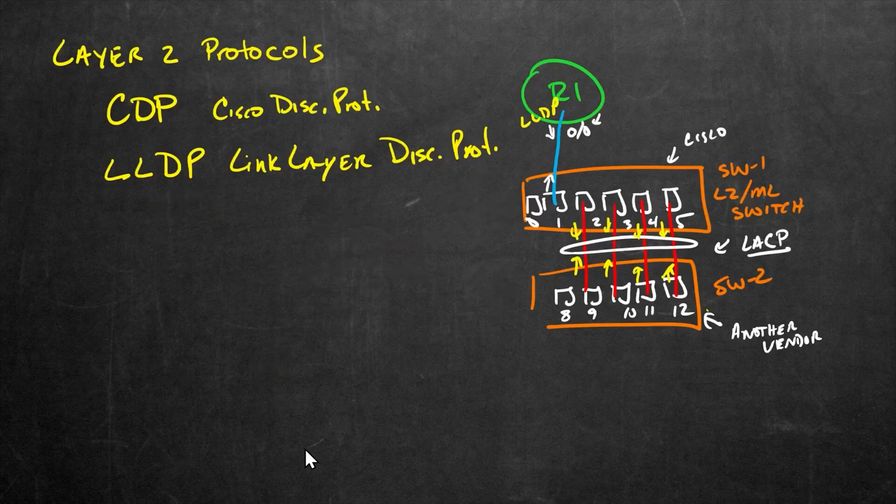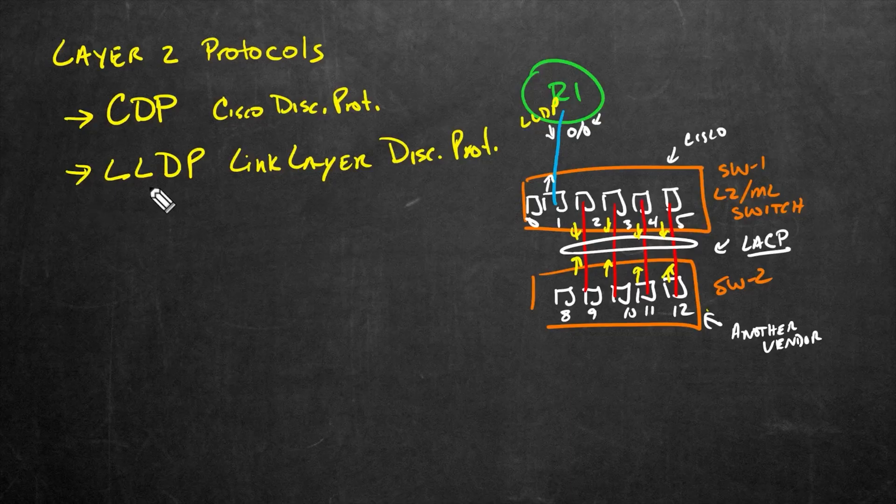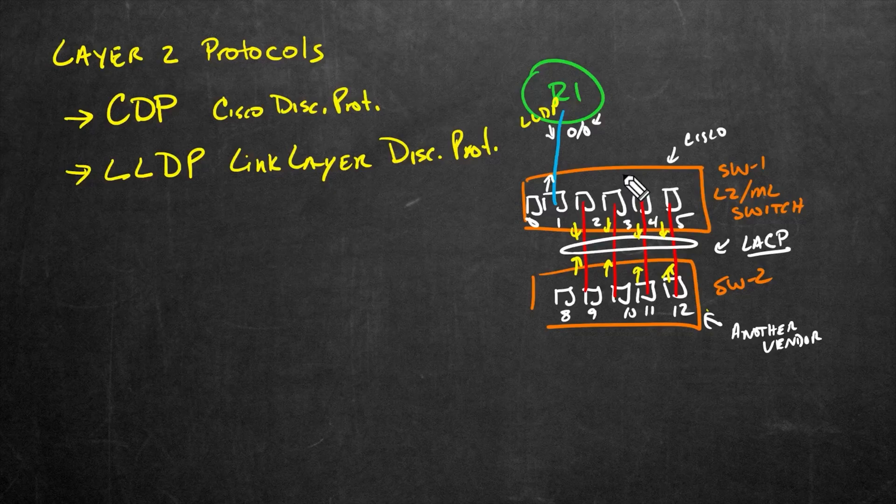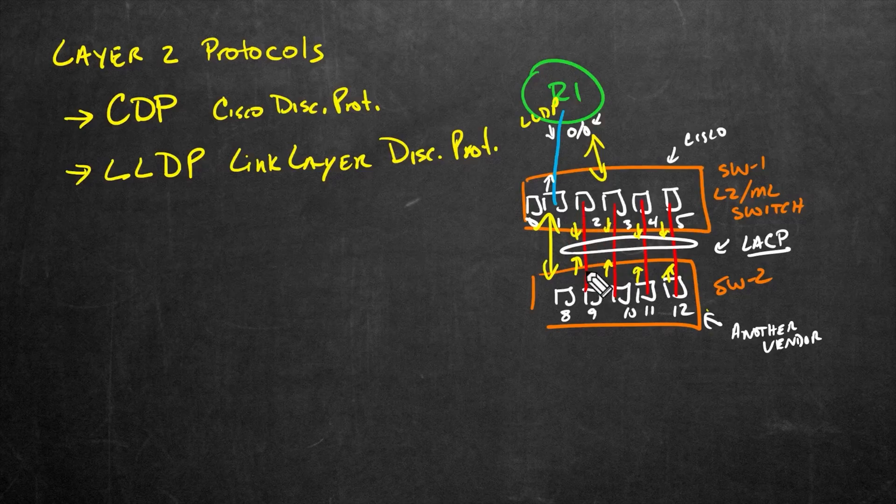So let me clean that up a little bit. And here's the key takeaways from the overview. We can discover what we're connected to from one device to another by using a compatible layer two discovery protocol. And it really doesn't matter which one we use, as long as the two devices that are communicating with each other both support the same one. And also, we're not restricted to just one protocol. So if we had this switch one that was using CDP, we could run that and exchange information between router one and the switch. And we could also use LLDP between switch one and switch two.